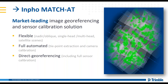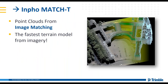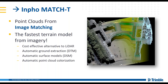After Match AT, the next step is surface generation. Match T allows you to create point clouds from image matching techniques. It's fairly quick and can be a cost-effective alternative to an active lidar system. Match T allows you to produce a classic DTM model as well as a classic point cloud, and if you choose the point cloud option, it will also be colorized with RGB values from the imagery.